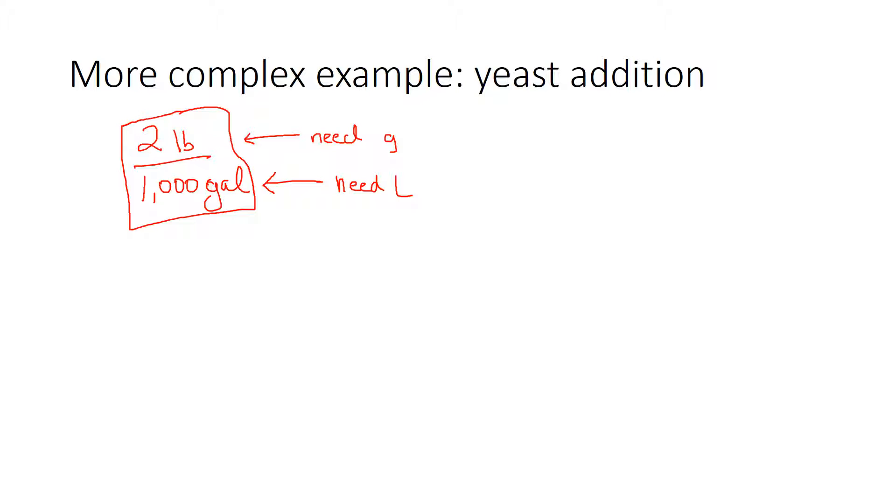But what I'd said in our little formula is we want to know how much we're adding per liter. So in this case, we want to convert pounds to grams and gallons to liters. All that is, is the use of two conversion factors instead of one, like we saw previously.